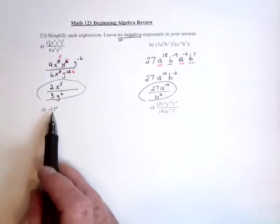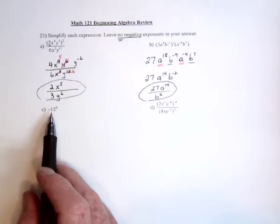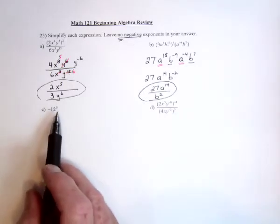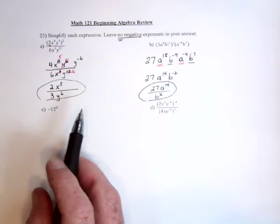And, this one right here. Well, some people say, well, anything to the 0 equals 1. Well, for the most part, that's true. But, 0 to the 0 is undefined, for one thing, so there's one exception.